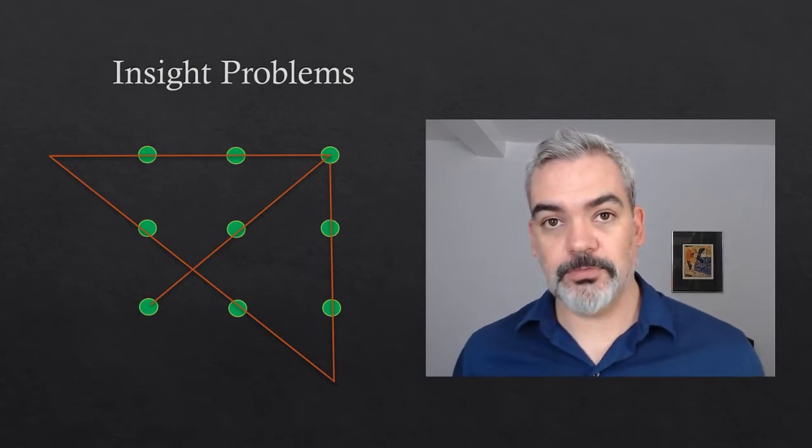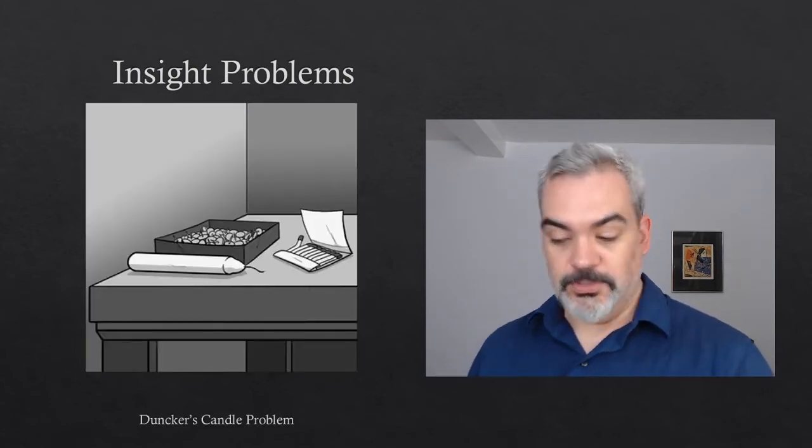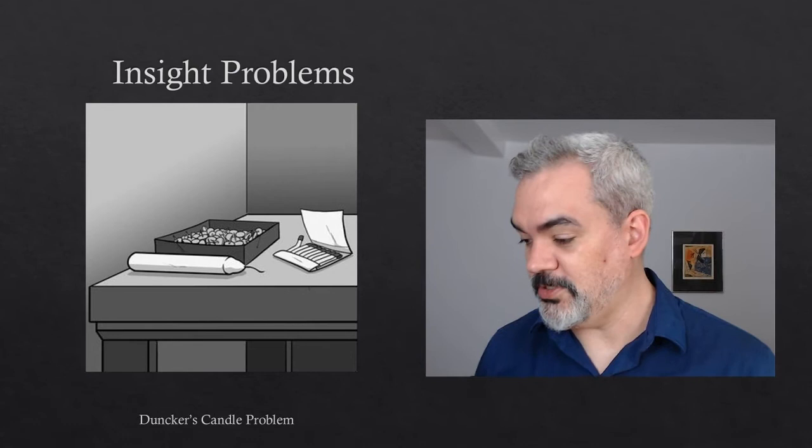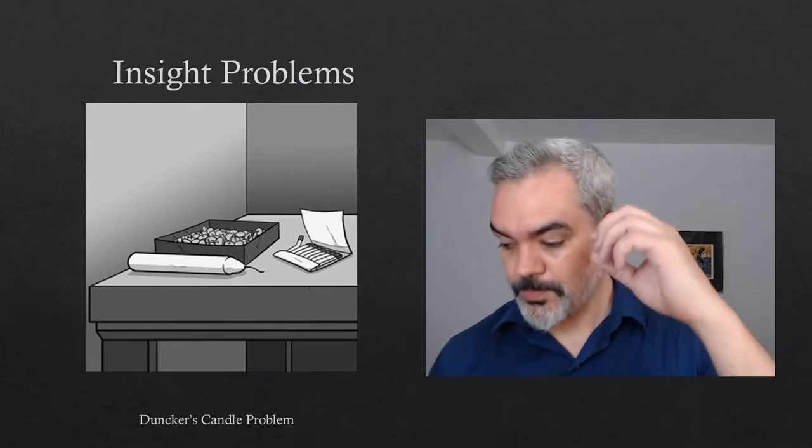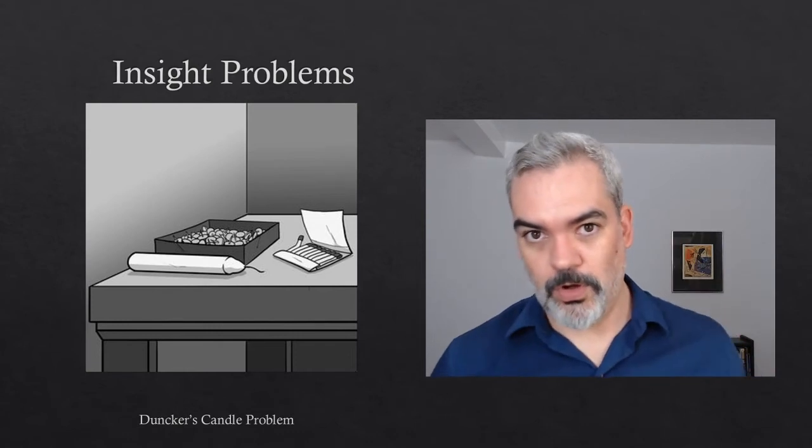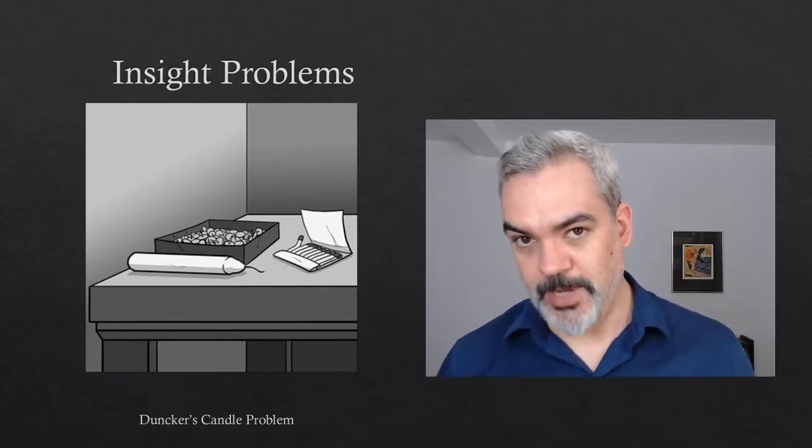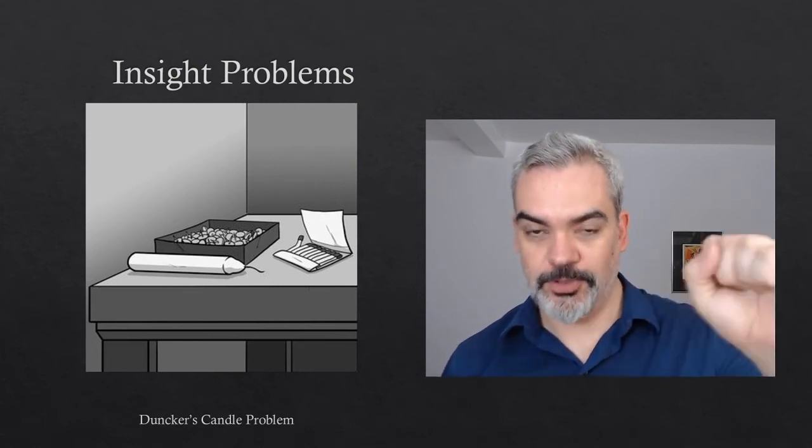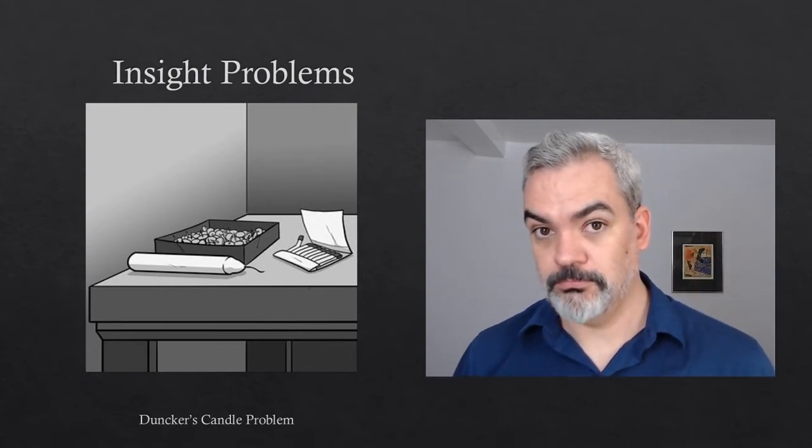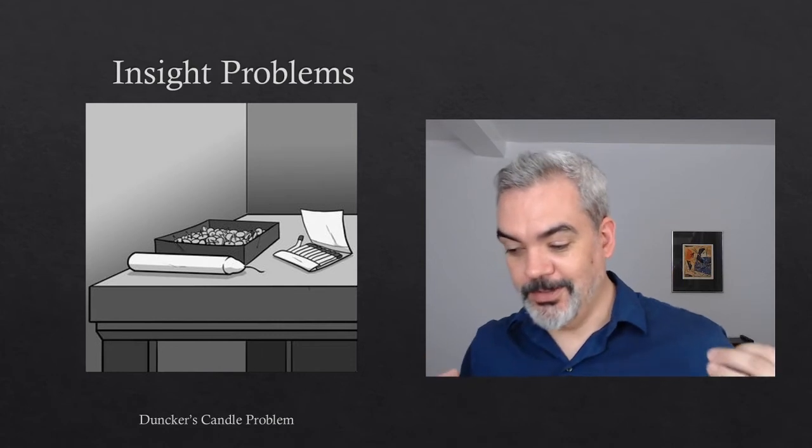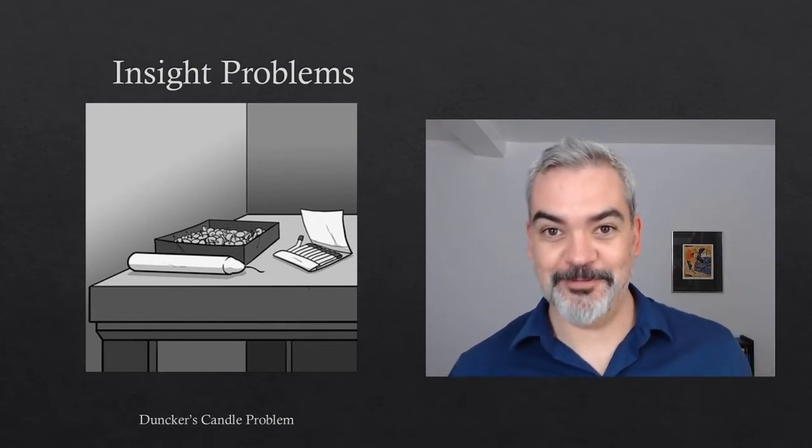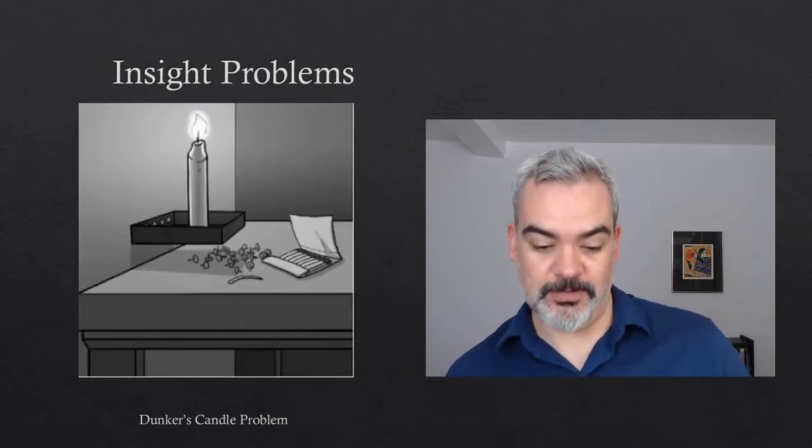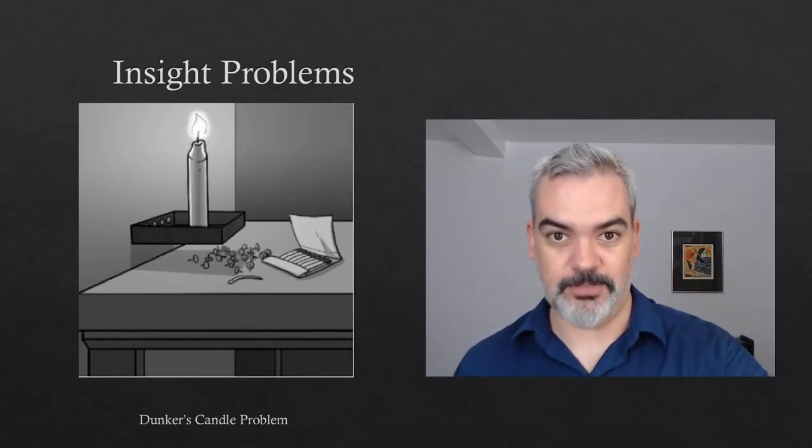So there's a whole class of this style of problems. I'll just show you one more. This is Duncker's famous candle problem. So Duncker introduced this, was published posthumously in 1945. The problem is the following: Can you attach the candle to the wall using a box of tacks and a book of matches? So you got this box full of tacks, you've got a book of matches. Can you affix the candle to the wall? And now I'll show you the solution. Pause now if you want to think longer about this. But here's one solution. What you do is dump out the tacks, and then tack the box to the wall, and then set the candle in the box.